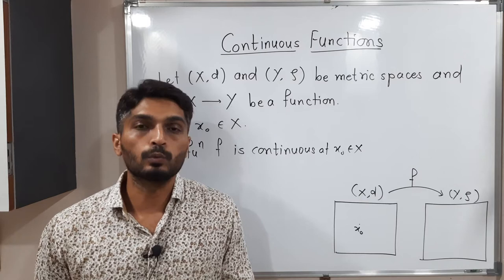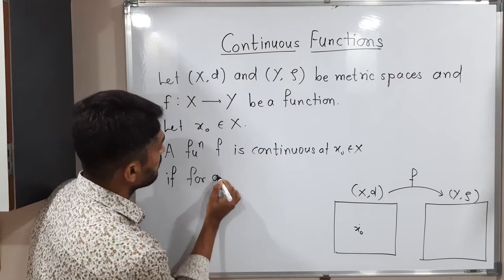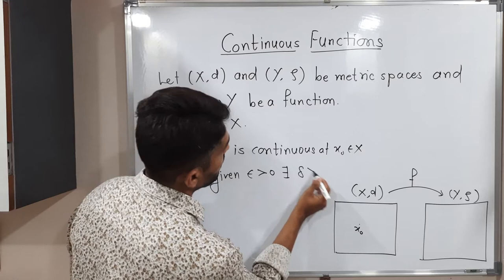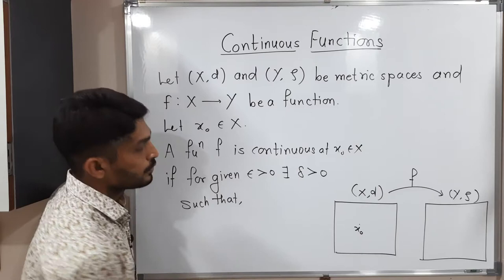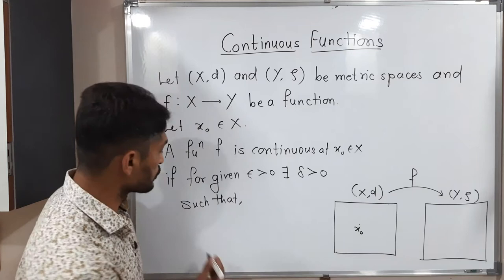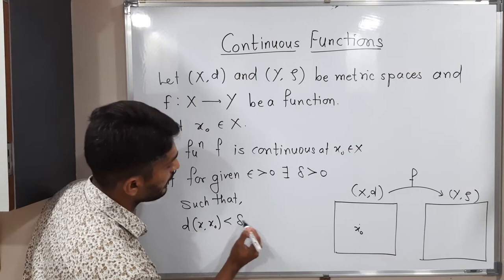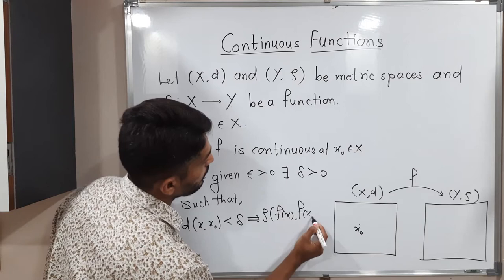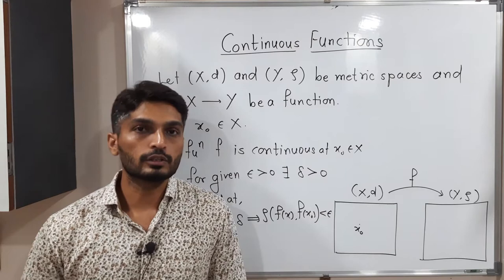For a given epsilon greater than zero, there exists delta greater than zero such that d(x, x₀) less than delta implies ρ(F(x), F(x₀)) less than epsilon. This is the definition of a continuous function. If this definition is satisfied we can declare F is continuous at x₀.